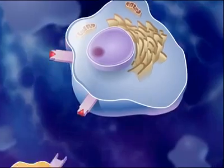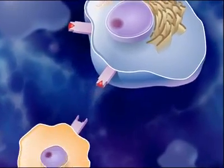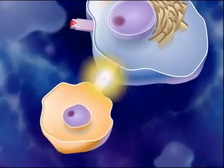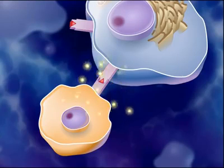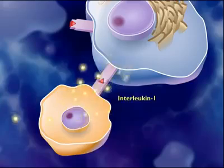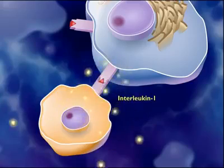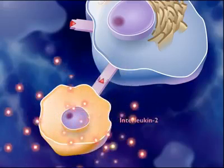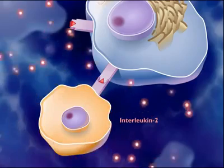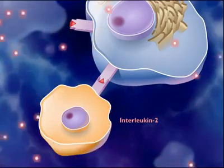An antigen-presenting macrophage interacts with a T-helper cell that can recognize the same antigen. During the interaction, the macrophage releases a chemical alarm signal called interleukin-1, which stimulates the T-helper cell to secrete interleukin-2.